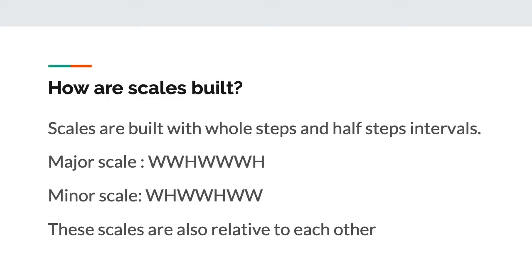The major scale formula is: whole step, whole step, half step, whole step, whole step, whole step, half step. The natural minor scale is: whole step, half step, whole step, whole step, whole step, half step, whole step. You'll want to write this down — you can take a screenshot or pause the video.